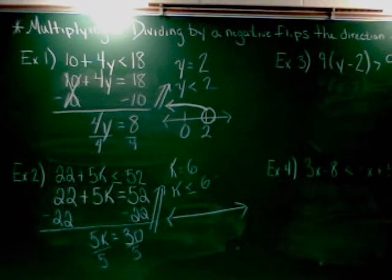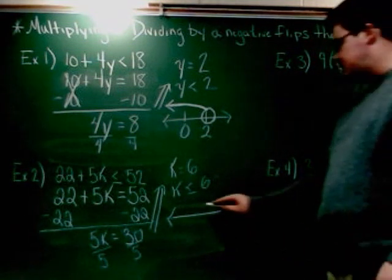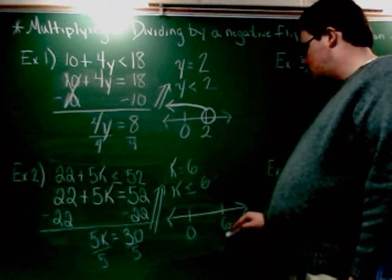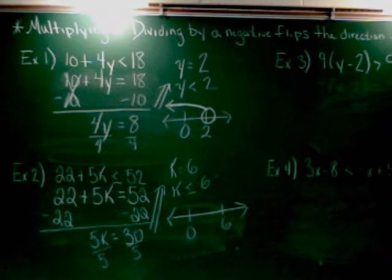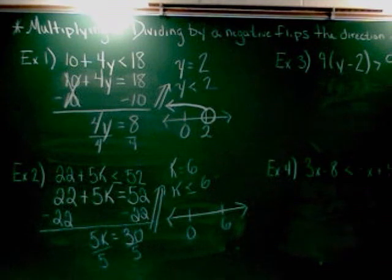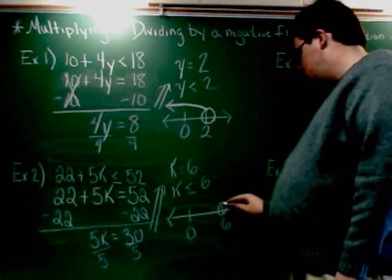What two things go on my number line? 0 and 6. Type of dot. Closed. Closed dot. Shading left or right? Left. Good.